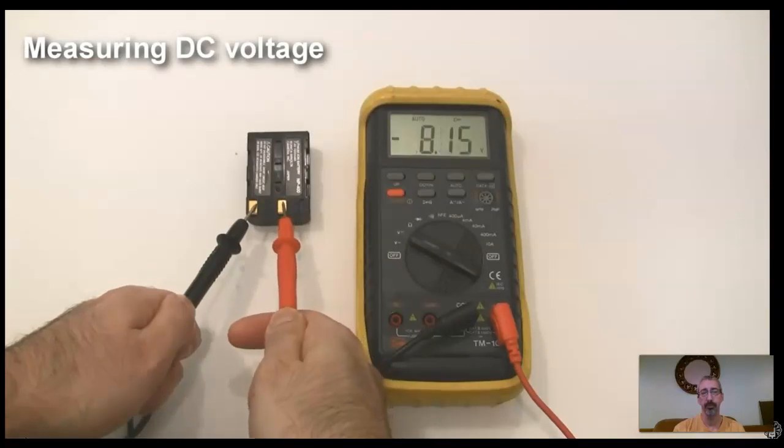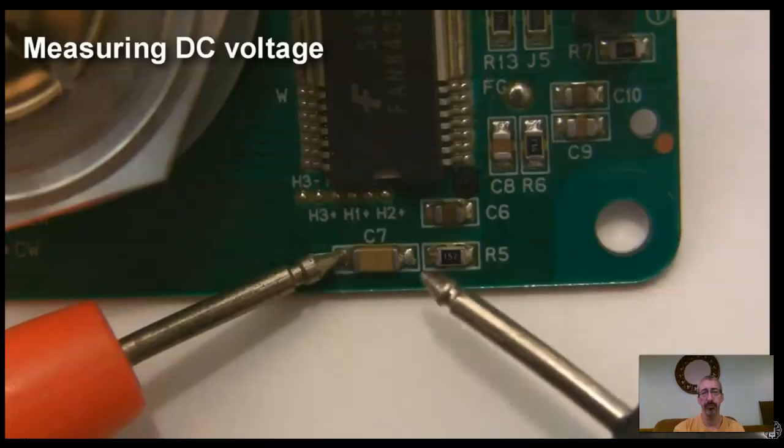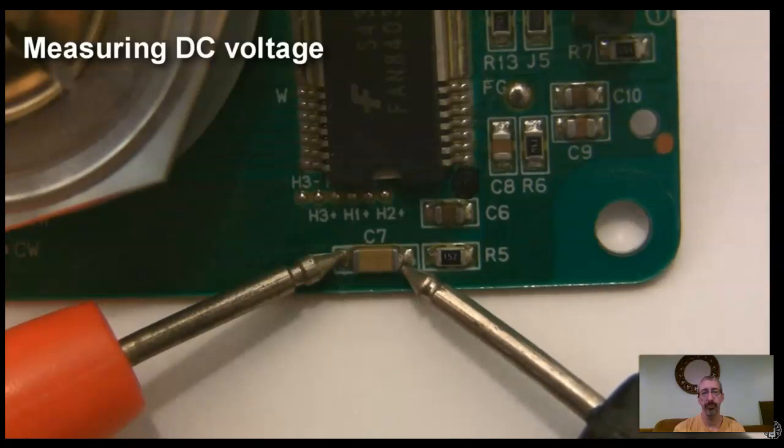If you get the wires backwards, that's okay, you'll just get a negative reading on your multimeter. And that's actually a good way to figure out polarity. Now you can measure voltages in pretty much any DC circuit, as long as you're careful to not short anything out with the metal probes.